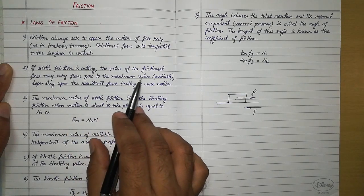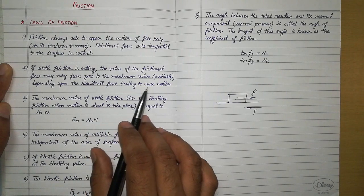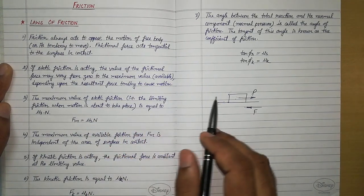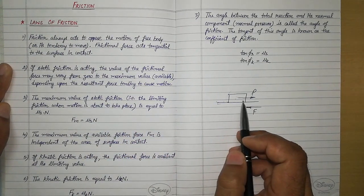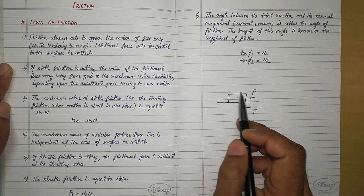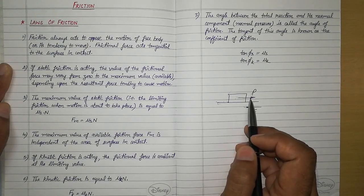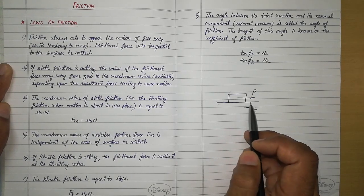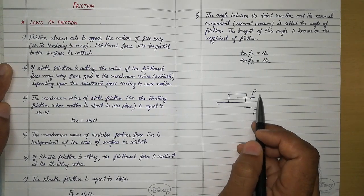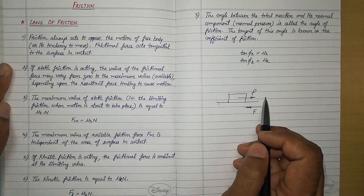Next: if static friction is acting, the value of the frictional force may vary from 0 to the maximum value depending upon the resultant force tending to cause motion. Suppose a body is resting on a surface and some force is applied with a component along the surface, so the tendency of that force will be to move the body towards the right.